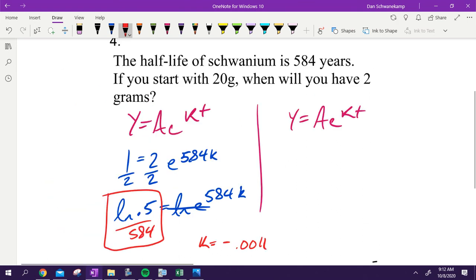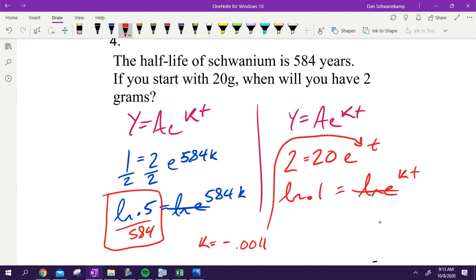Then once I find that, then I'm solving the rest of it. I'm going to start with 20 grams, I want to end with 2 grams. My k is this number right here, and I'm solving for t. Divide by 20, I get 0.1. I'm going to take the natural log. Natural log, that's going to cancel. Natural log of 0.1 divided by this k value that I found right here, I get t is equal to 1904.